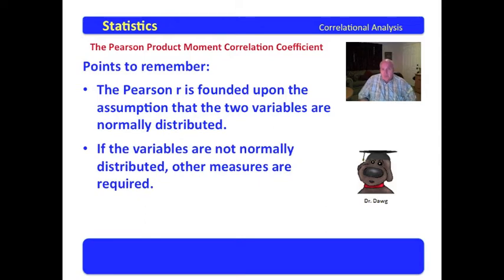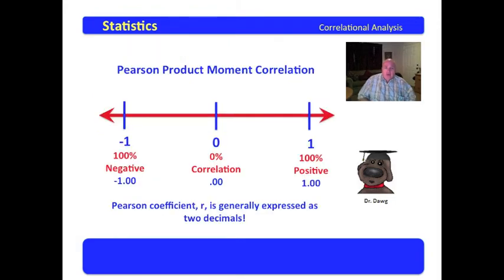If the variables are not normally distributed, other measures are required. You will begin to hear a term in this course called non-parametric. A non-parametric methodology is a methodology which handles non-normally distributed curves. So the Pearson R is founded upon the assumption that the two variables are normally distributed.